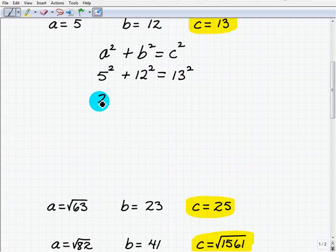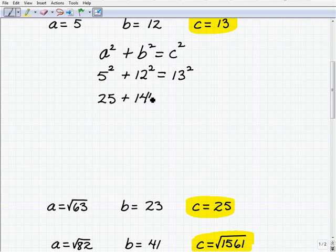So obviously 5 squared is 25 plus 12 squared, which is 144. So let's see what 13 squared is. Okay, 169. So is 144 plus 25, 169. And we can see that it is.